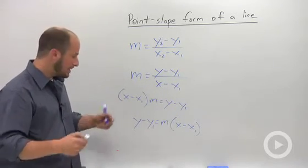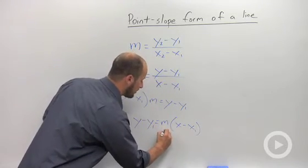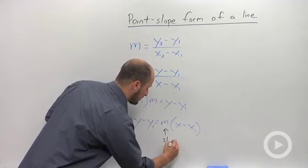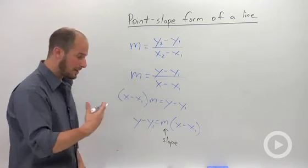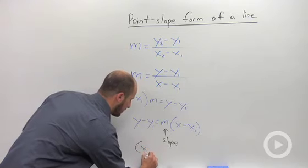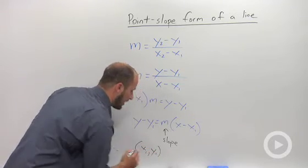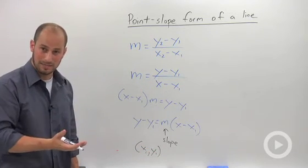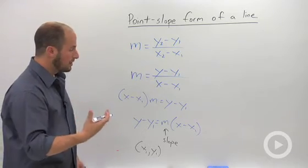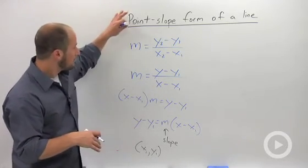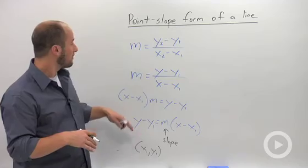And what this is, is basically m is still your slope. And then what we have here is we have the point x1, y1 that is also on the line. So point, slope, form of a line.